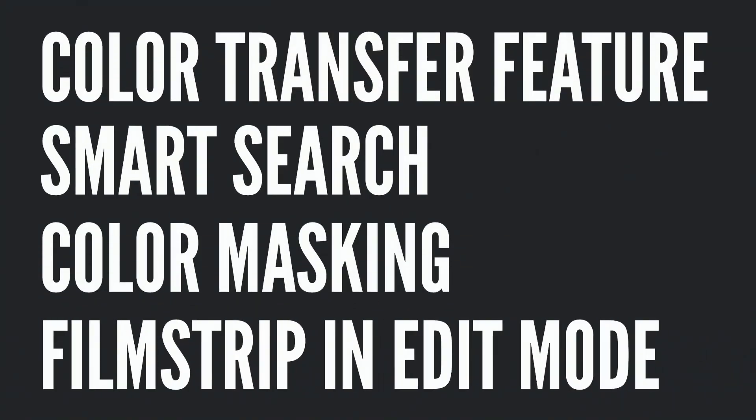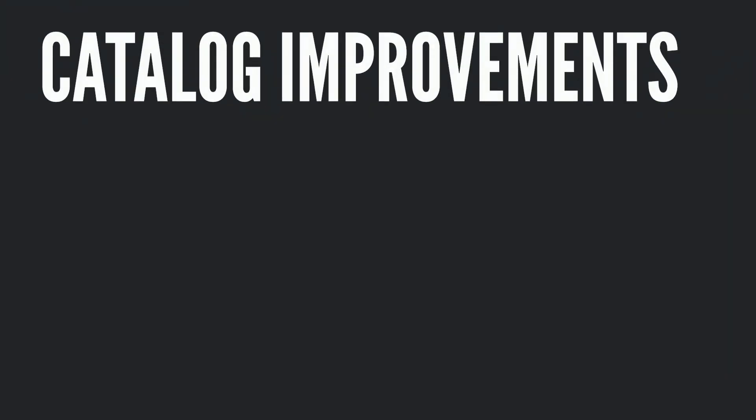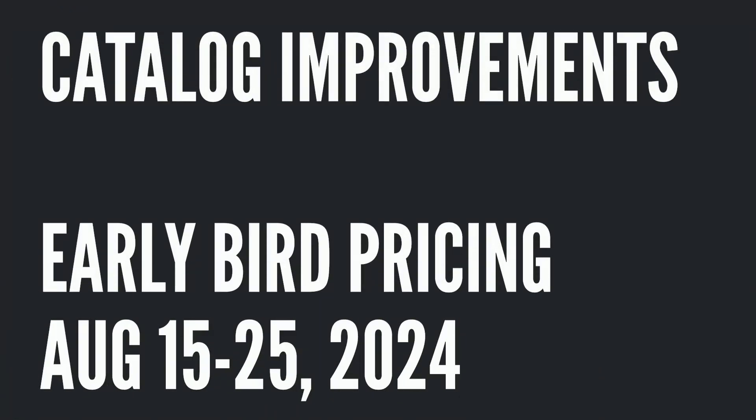What are all of these different features? We have a new color transfer feature, smart search and AI smart search, color masking, and filmstrip now in the edit mode as well as in the preset mode. We also have some significant upgrades to the catalog, and as I mentioned earlier, some early bird pricing from today till August 25th, 2024. This software is going to be released in about six weeks, so you can get in starting today on the early bird discounts to save a lot of cash.